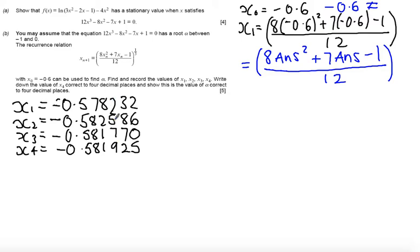So here's your four values. Now what we want to do is show that x4 is correct to four decimal places so this is going to involve change of sign test.